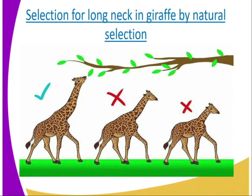In our previous lessons, we have covered mutations, which include gene mutations and chromosomal mutations. Organisms with beneficial mutations are able to pass them on to their offspring during reproduction. Sexual reproduction is particularly significant since meiosis leads to new combinations, while fertilization spreads the genes widely in the population.